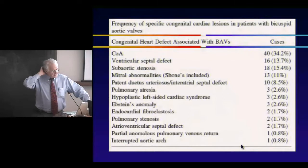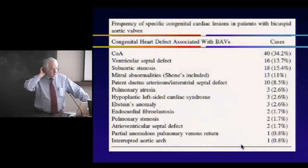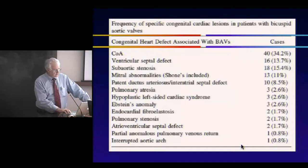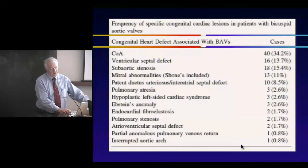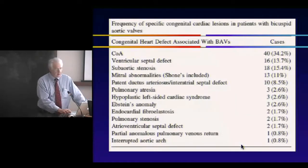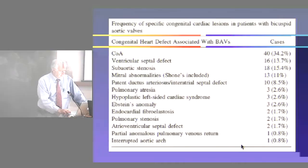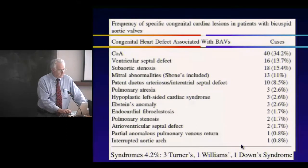Diseases found in our population: coarctation was highest — we had 34% of those cases. Then VSD, sub-aortic stenosis, mitral valve anomalies, patent ductus, and a scattering of other conditions including pulmonary stenosis, Ebstein's malformation, AV canal defects, and so forth.